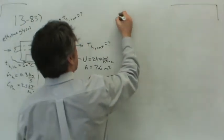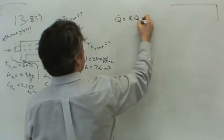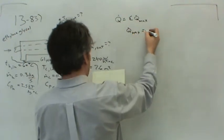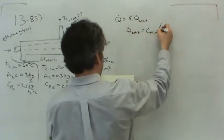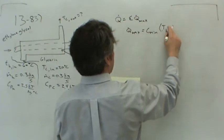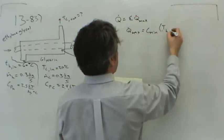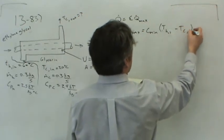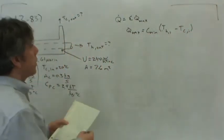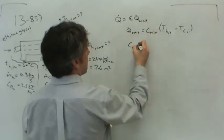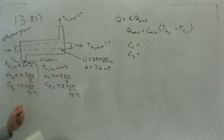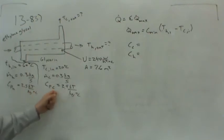The heat transfer rate equals the effectiveness multiplied by the maximum heat transfer rate. The maximum heat transfer rate is the minimum capacity rate multiplied by the temperature of the hot stream coming in less the temperature of the cold stream coming in. So we should find out what the minimum capacity rate is by calculating the capacity rate on the hot side and on the cold side. Since the mass flow rate is the same, whichever fluid has the lower heat capacity will give the minimum capacity rate.